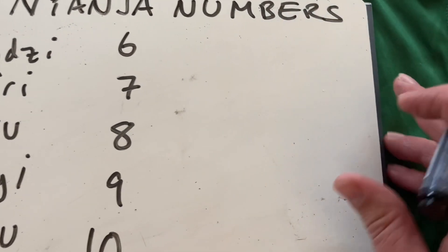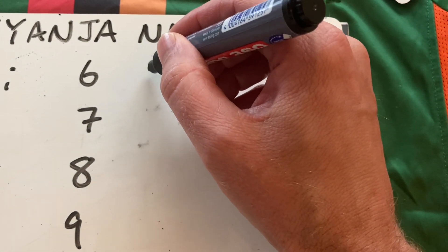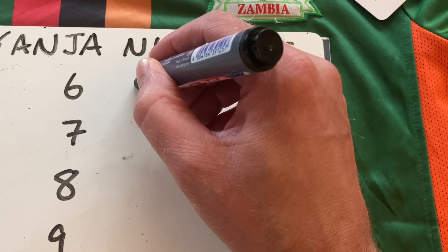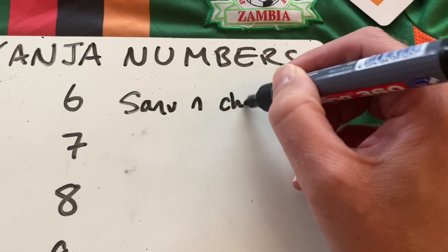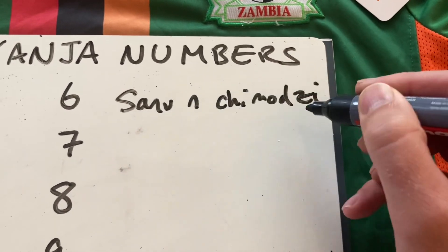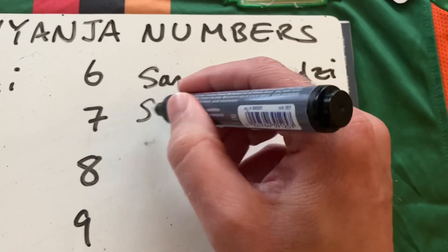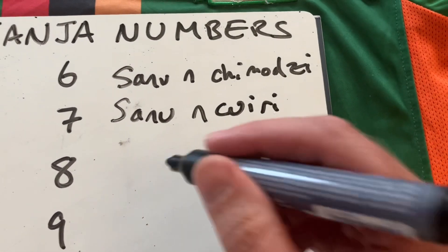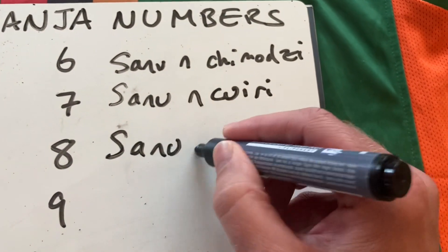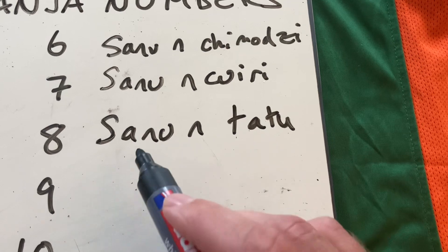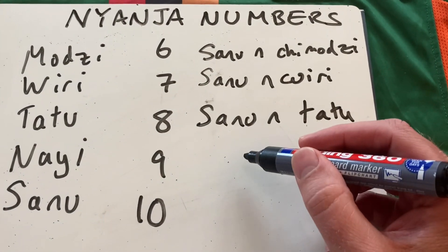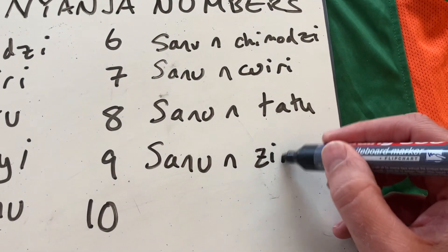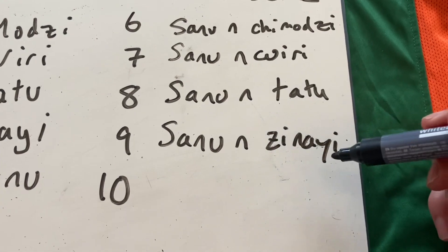My next guest presenter is going to help me with number six. So in Nyanja you don't actually say six, seven — you say like five and one, five and two, five and three. And six would be sānu amōzi, so five and one. And then seven is sānu awīri, that's five and two. And eight is sānu atātu, five and three. What's nine? Sānu wa nāī — so that's five and four.